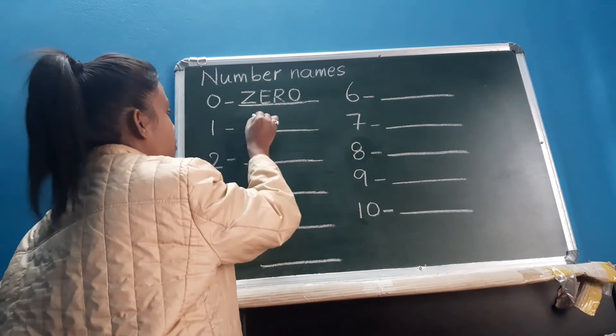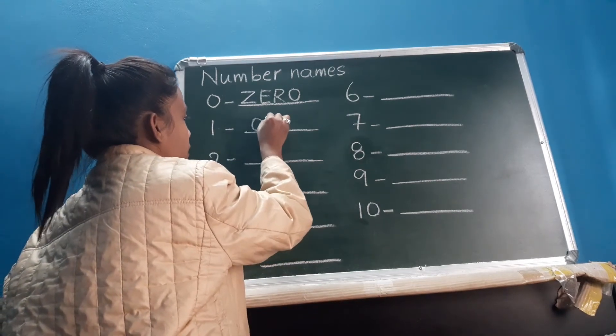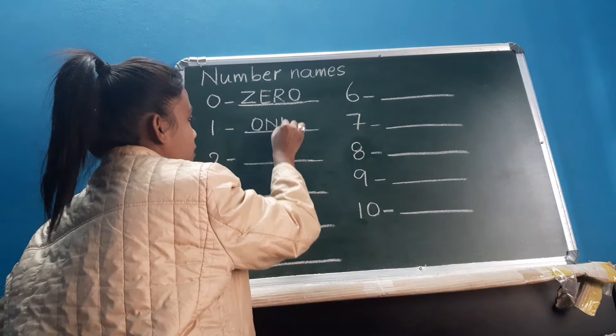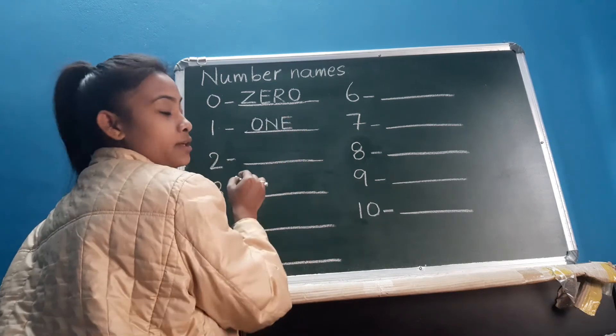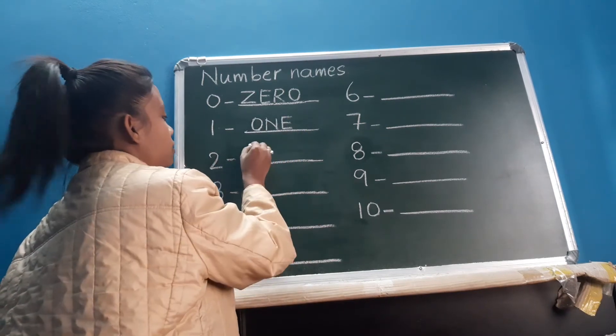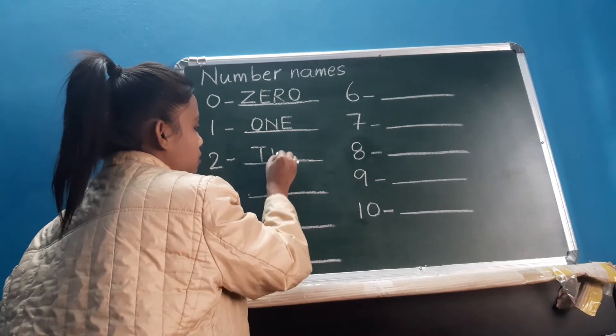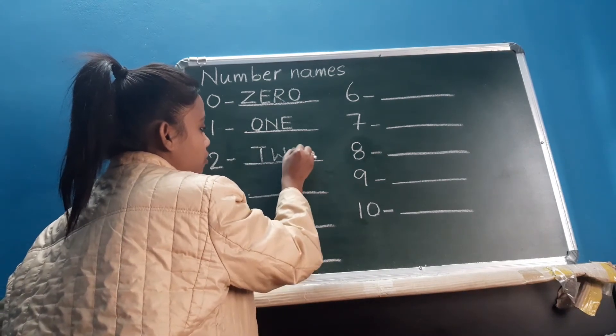Next is 1: O, N, E. One. Next is 2: T, W, O. Two.